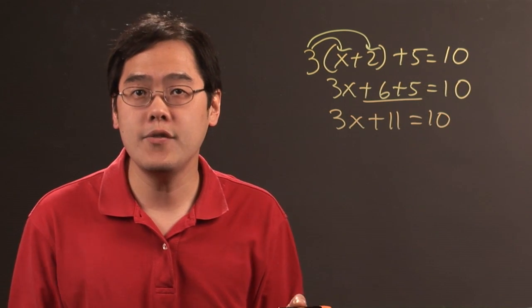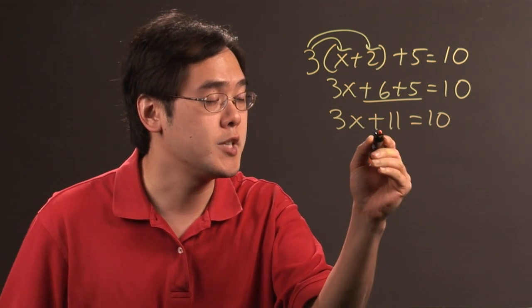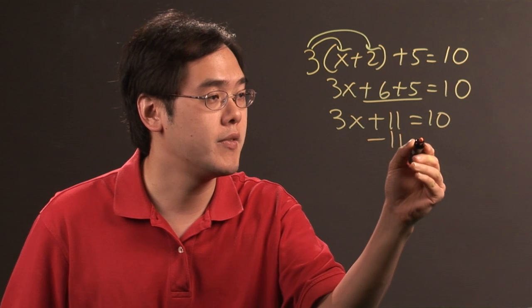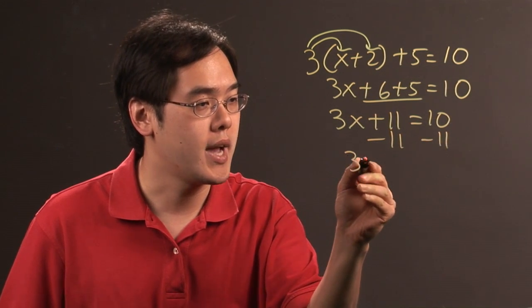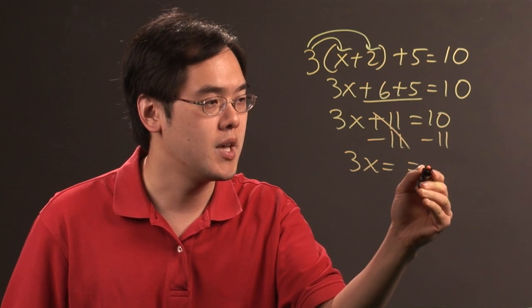To get x by itself, you want to get the non-x terms over to the other side. In this case, because you have plus 11, you want to move the 11 over by subtracting 11 from both sides. So you have 3x equals—the 11s go away—10 minus 11, which is negative 1. So 3x=-1.